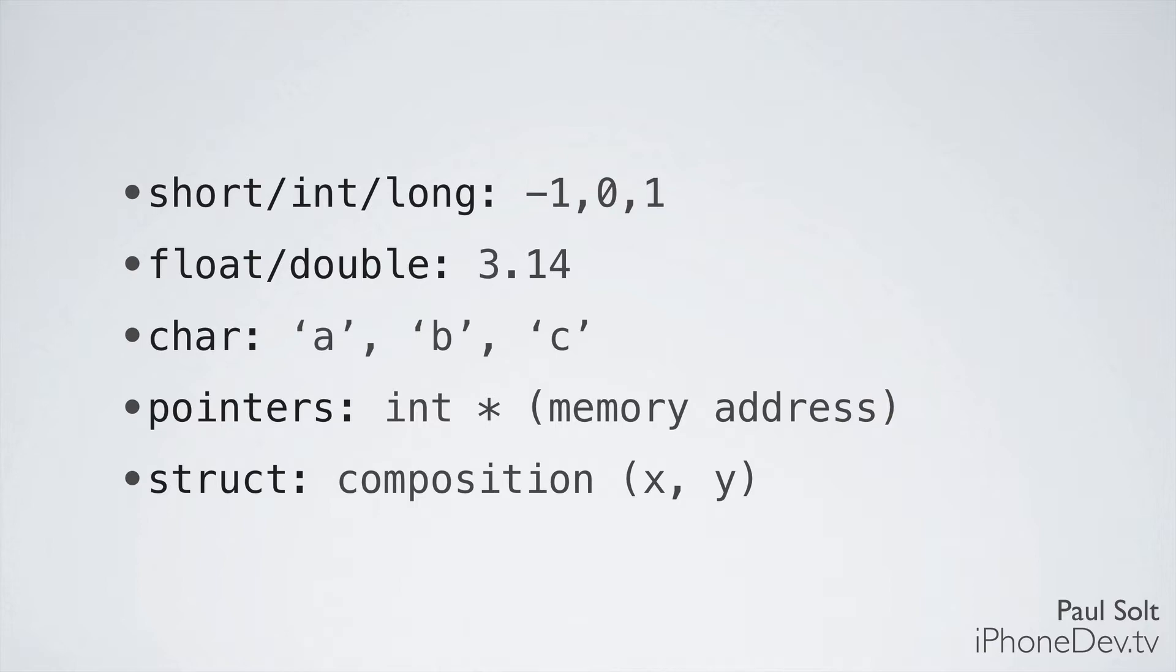Then we have pointers. You can think of these as a house address. We call these memory addresses in the computer, and this allows us to reference and refer to different portions of memory on your hard drive. So int star, the asterisk is something that we call star, is a declaration of a pointer.